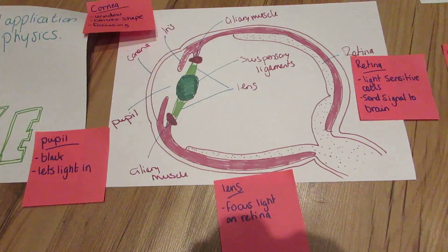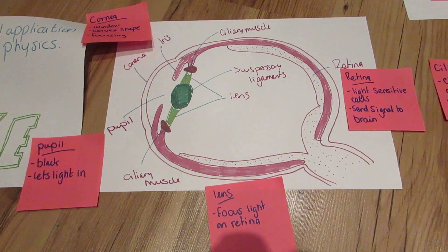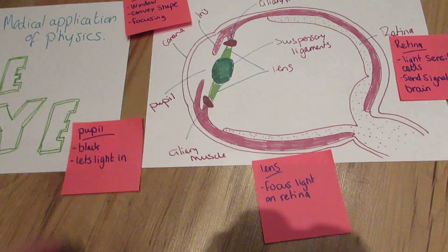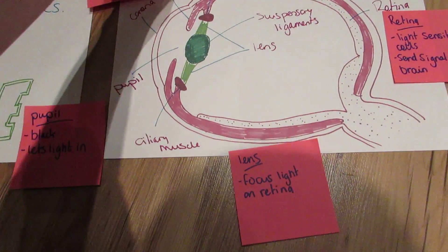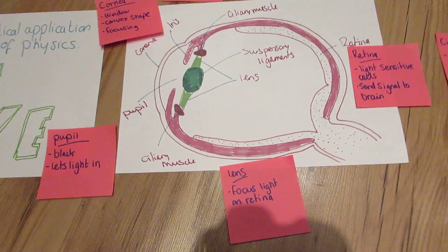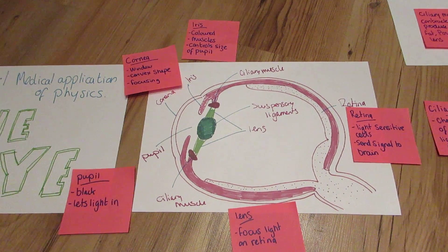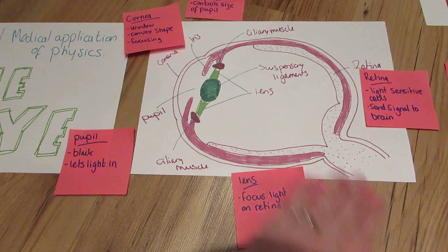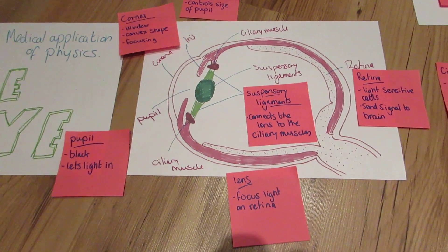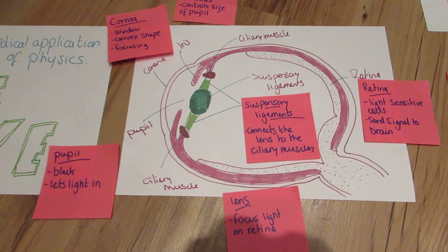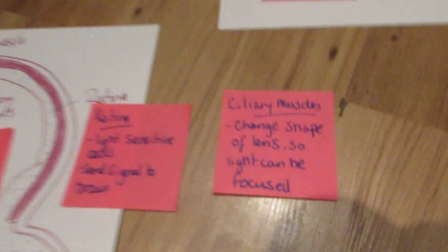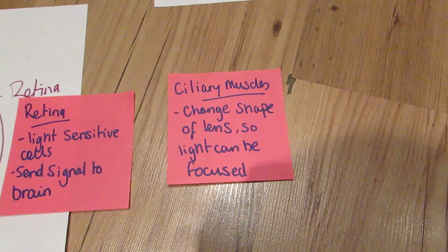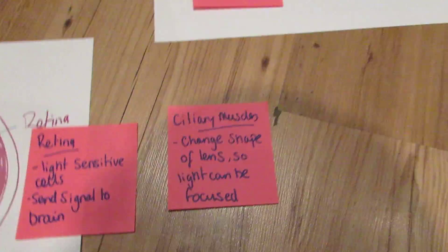The pupil is the black bit that you can see in your eye, and that lets all the light in. The iris is the coloured bit in your eye and it controls the size of the pupil. The suspensory ligaments connect the lens to the ciliary muscles. The ciliary muscles are rather important — they change the shape of the lens so that light can be focused.